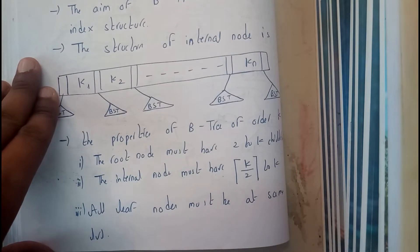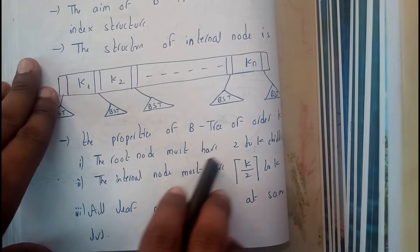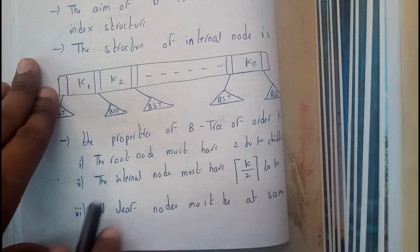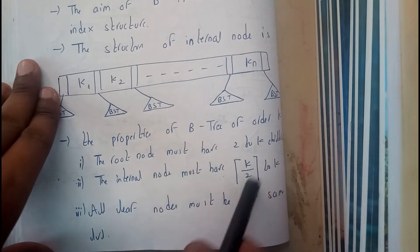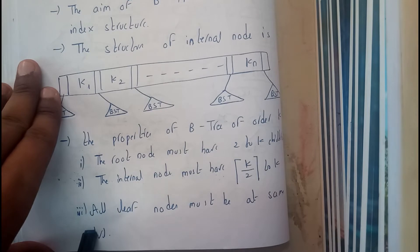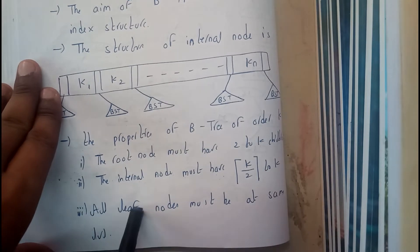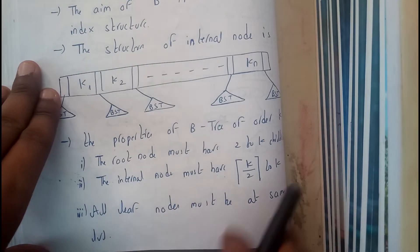Just take a piece of paper and note these down: the root node must have 2 to k children, the internal node must have k/2 to k children, and all leaf nodes must be at the same level.